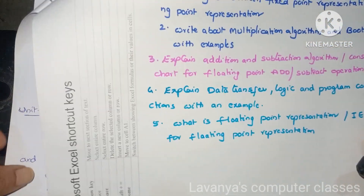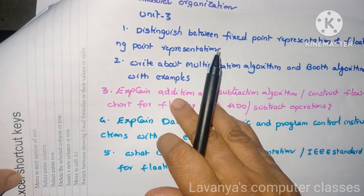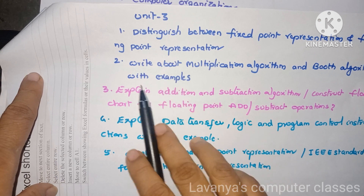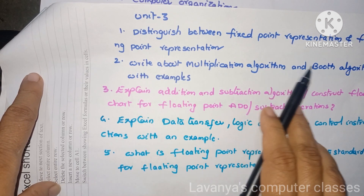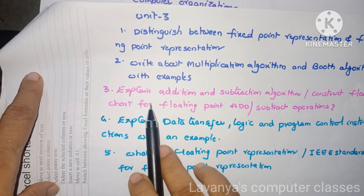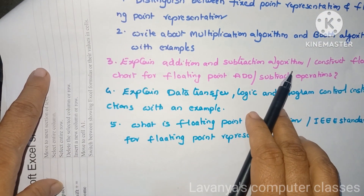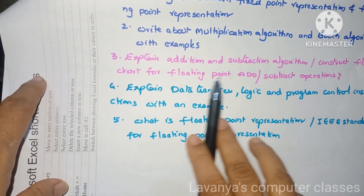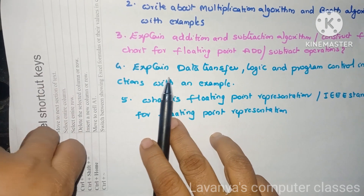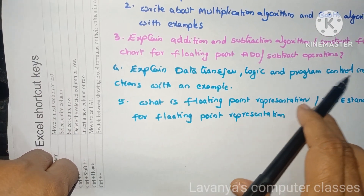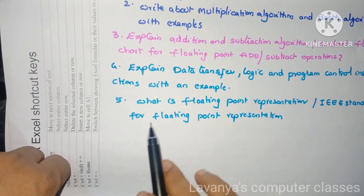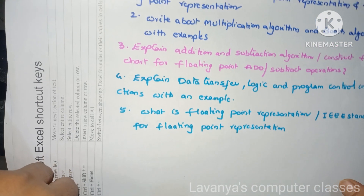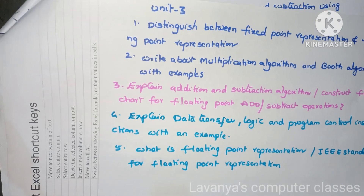Unit 3 important questions: distinguish between fixed point representation and floating point representation. Next, write about the multiplication algorithm and also explain the algorithm with examples. Explain about addition and subtraction algorithms and construct a flow chart for floating point add or subtract operations. Next one is: explain data transfer commands, logic and program control instructions with an example. What is floating point representation and the IEEE standard for floating point representation? These are the important questions in Unit 3.